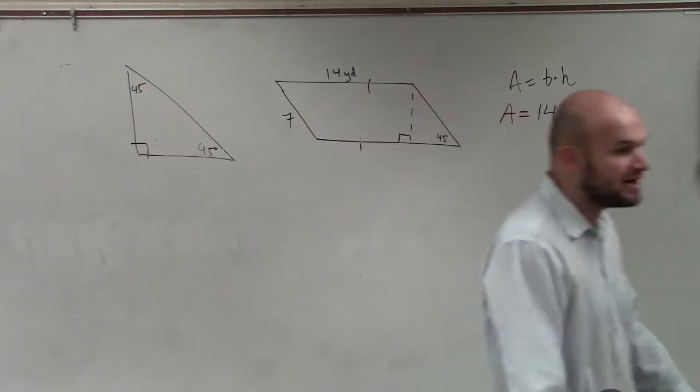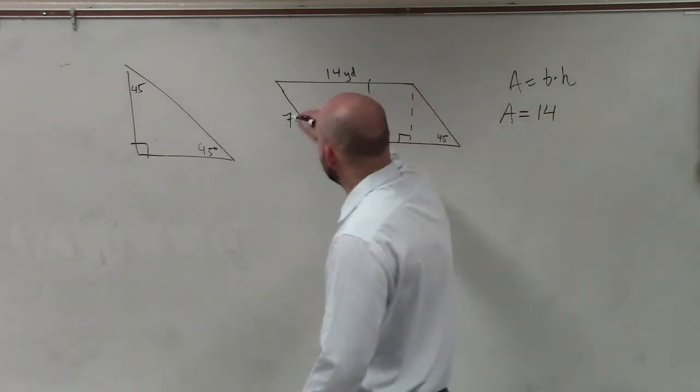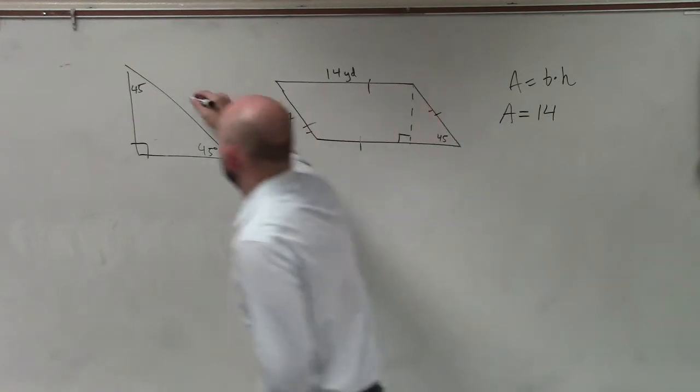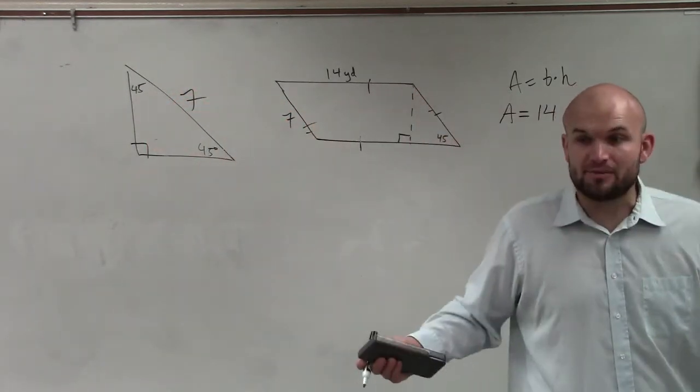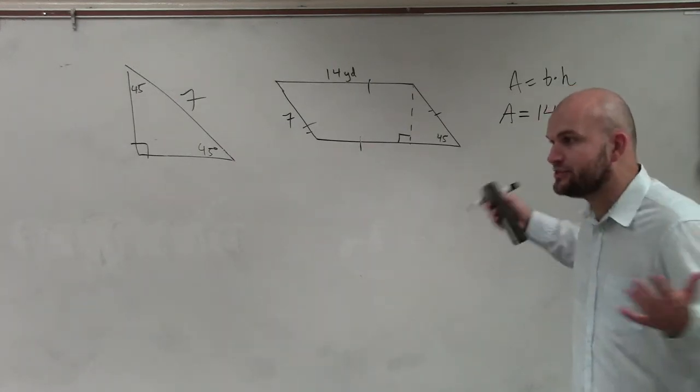So you have to look for your special right triangles, because now you have a special right triangle. And we know that if that's 7, then that has to be 7, right? So now we look at our special right triangle and say, all right, what is the relationship of my sides in a 45-45-90 triangle?